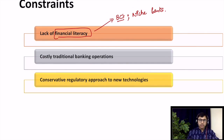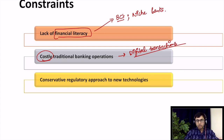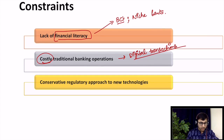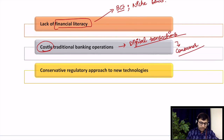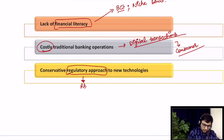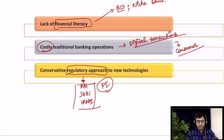The second constraint is costly traditional banking operations. Traditional banking operations have been very costly because of lack of digitization and lack of digital transactions. The country has been using non-digital offline transactional methods, and people have not adapted to change fast enough. That cost is directly transferred to the consumer. The third constraint is a conservative regulatory approach to new technologies — meaning how RBI and other regulators like SEBI are looking at new technologies, new instruments and new methods of banking, and whether they are moving fast enough to encourage such technologies.